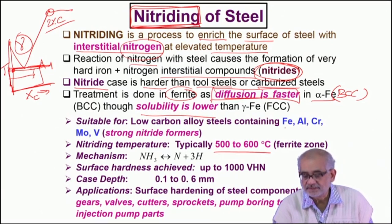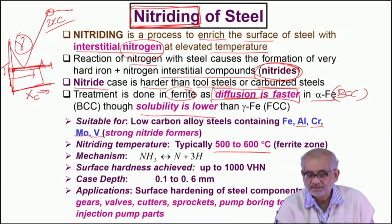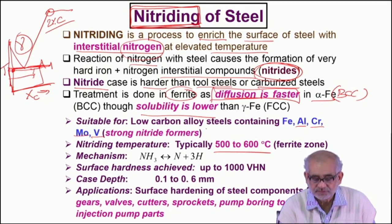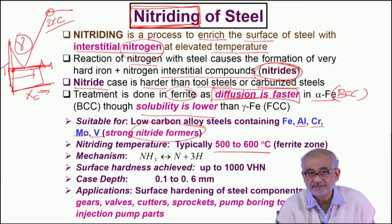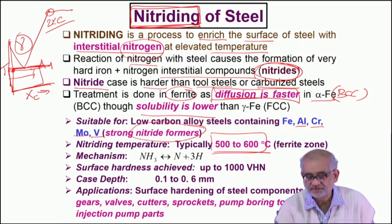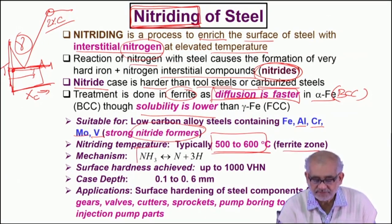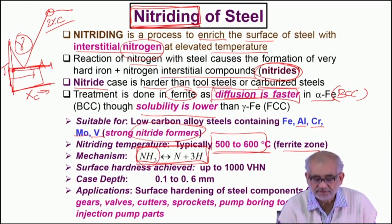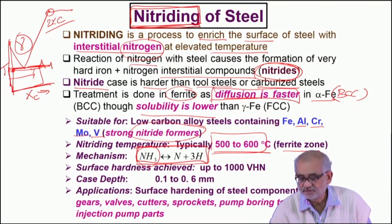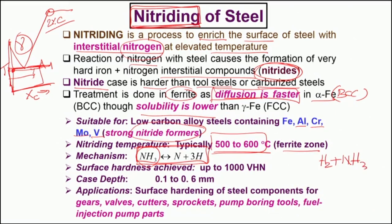If steel contains alloying elements like aluminium, chromium, molybdenum, vanadium, or titanium — these are known to be strong nitride formers — we would prefer to use either plain carbon steel or alloy steels containing one of these elements. The temperature is typically close to 500–550°C in the ferritic zone. The most important reaction key for nitriding is the dissociation of ammonia into nascent nitrogen and hydrogen. The nitriding gas mixture will always contain hydrogen along with ammonia — a typical mixture would have 80–95 percent hydrogen by volume.